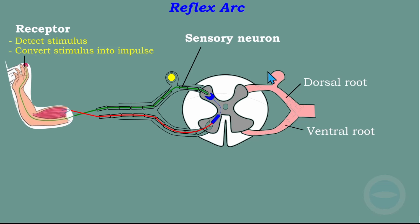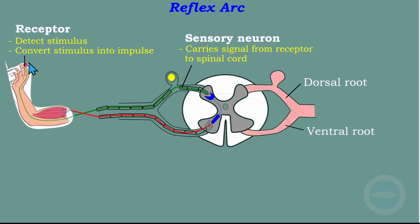The next part is the sensory neuron. The sensory neuron is a neuron that transmits impulses. The function of the sensory neuron is to carry signals from the receptor to the spinal cord. As the receptor detects the stimulus, it is connected to the sensory neuron, which carries this information until it reaches the spinal cord.